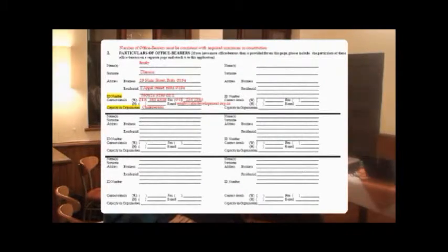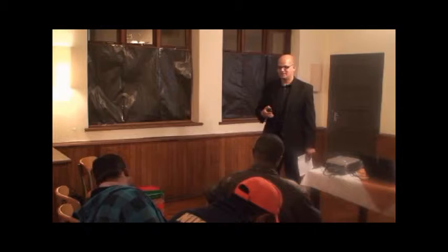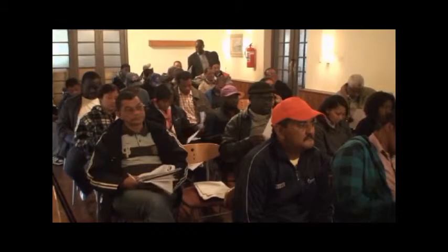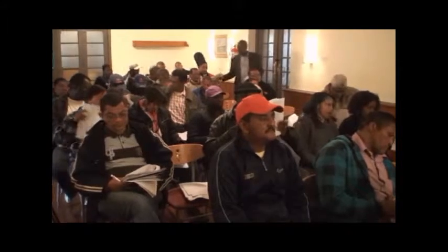On page two, it asks that you list the names of the office bearers — this is the committee members, the Mancom and Excom and all those members. What is important here is that if the constitution says you will have a minimum of seven committee members, then at least on this form you must have at least seven members. If you have only five and the constitution says seven, it means you don't comply with your constitution. So whenever the form is filled in, it must always be checked against what's actually in the constitution.